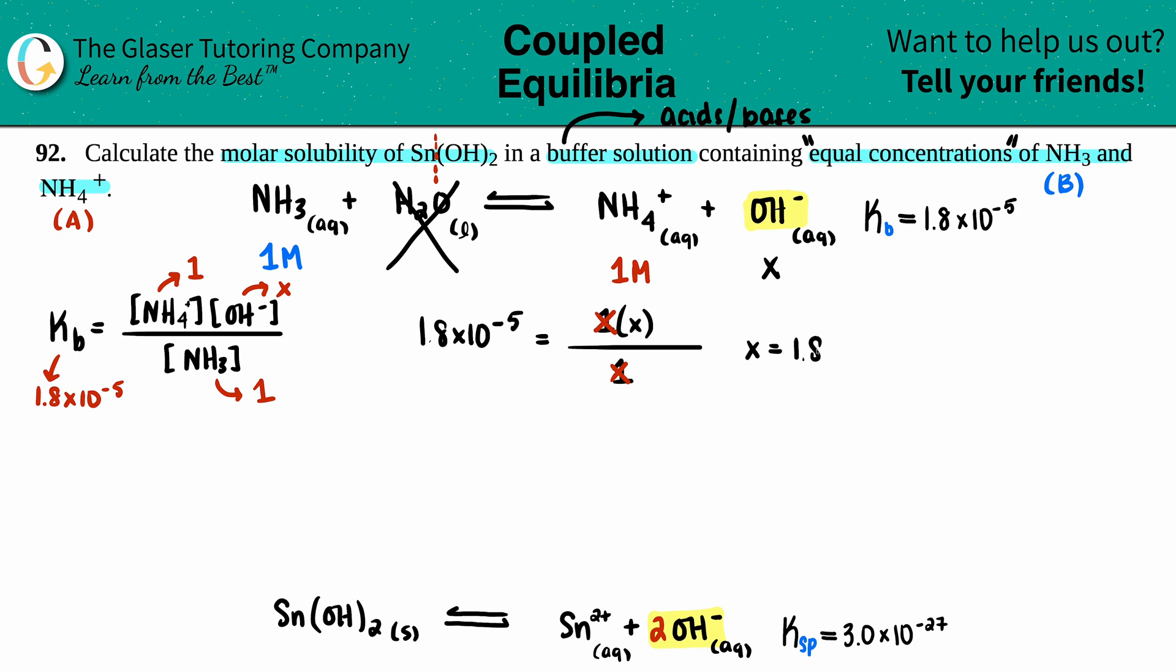x equals 1.8 times 10 to the negative fifth, and that's molarity. That's what the OH- concentration was.